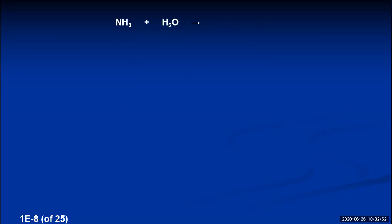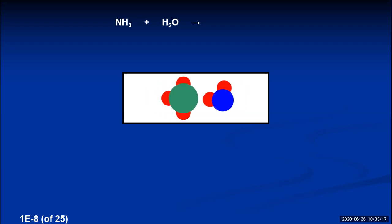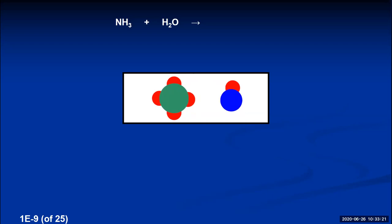Bronsted and Lowry wanted to explain why ammonia is a base, since the Arrhenius definition couldn't account for it. They said if you put ammonia in water and the ammonia molecule bumps into a water molecule, ammonia attracts and takes the hydrogen ion from the water. Ammonia gains a hydrogen ion and becomes positively charged (ammonium ion), while the water loses the hydrogen ion and becomes a hydroxide ion — and it's still the hydroxide ion that causes basic properties in solution.